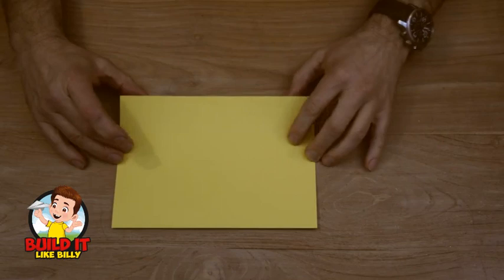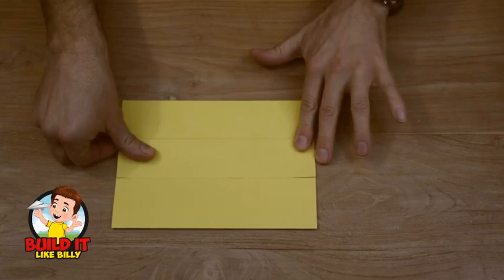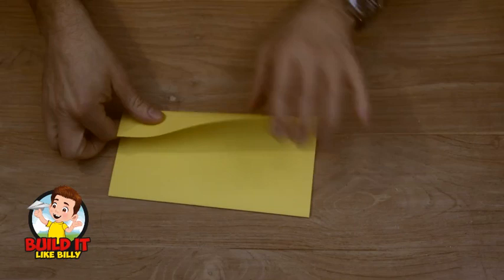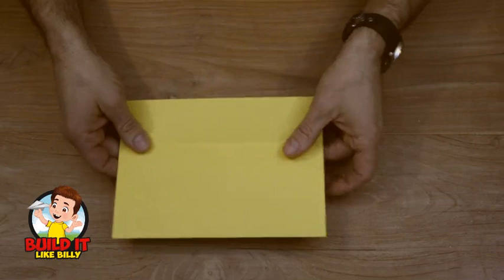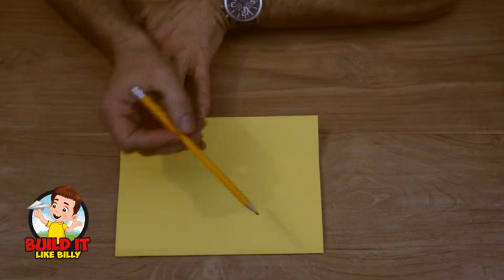We're then going to fold about 3cm up on each side. Right, if we unfold these two sections, we can draw our bug on.